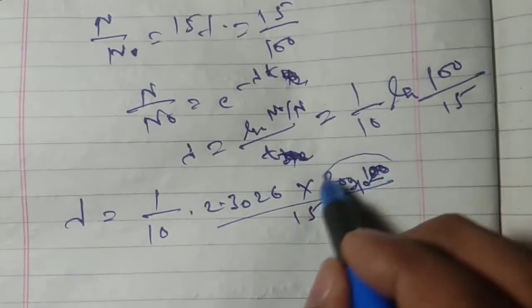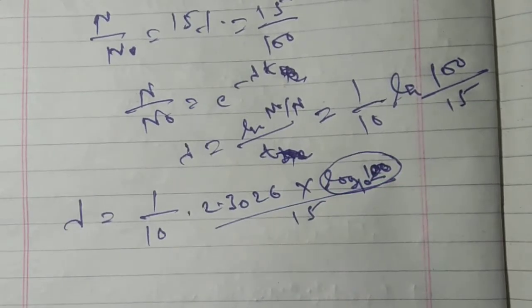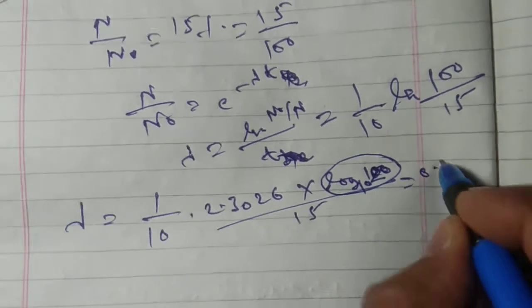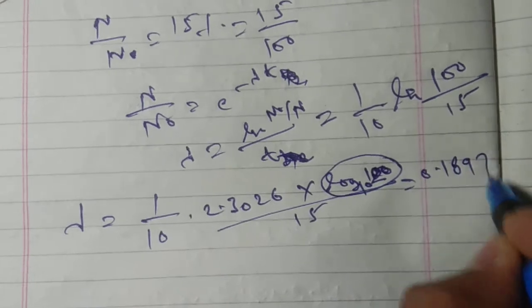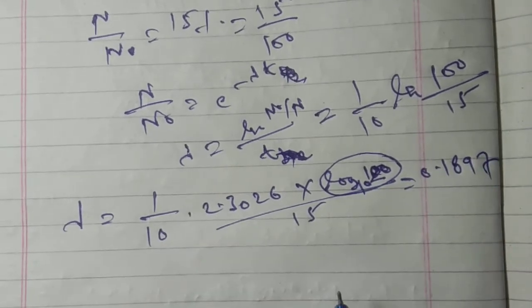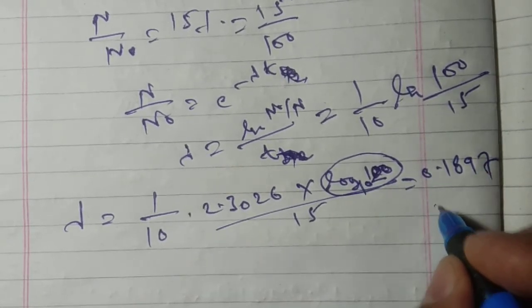After solving, finally we get 0.1897 per day or day minus one.